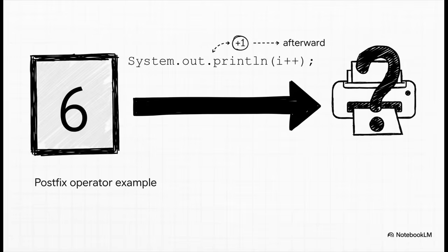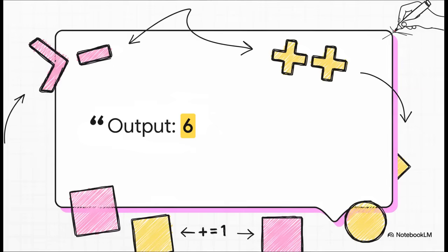Okay, so i is now six. That's its current value. Let's run our next line. But this time we're using the postfix version, i plus plus. What gets printed now? And this is just perfect. It shows the difference so clearly. The output is still six. With postfix, the rule is use first, then increment.